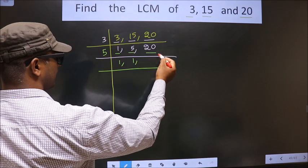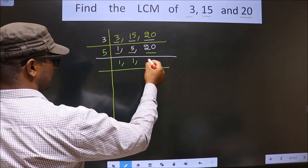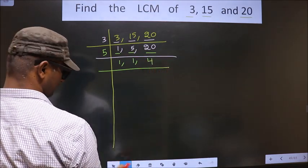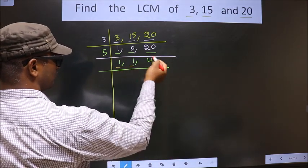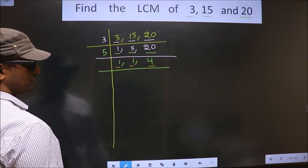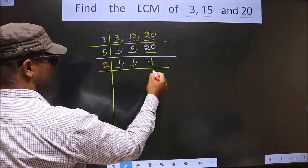The other number is 20. When do we get 20 in 5 table? 5, 4 is 20. Now, we got 1 here, 1 here. So, focus on the other number. That is 4. 4 is 2, 2 is 4.